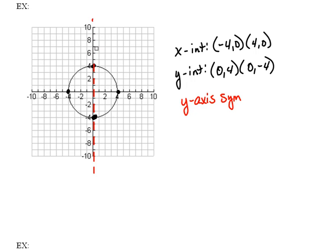Now it also has other symmetry though. If I were to draw a line down here through the x-axis, we also have perfect balance on either side. So this has x-axis symmetry as well.